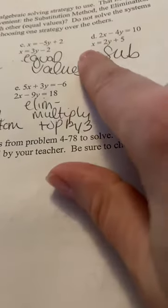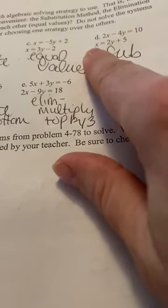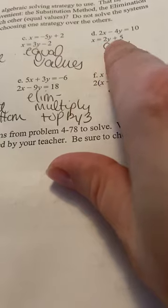So here, again, on d, since x is by itself on this side, then I'm just going to substitute 2y plus 5 in for x and then solve it.